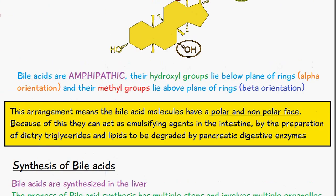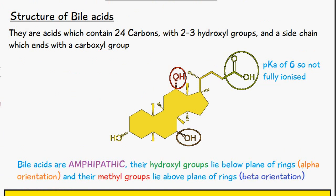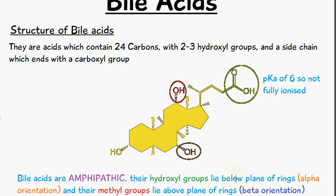Bile acids are amphipathic, so their hydroxyl groups lie below the plane of rings, which is alpha orientation, and their methyl groups lie above the plane of the ring, which is beta orientation.